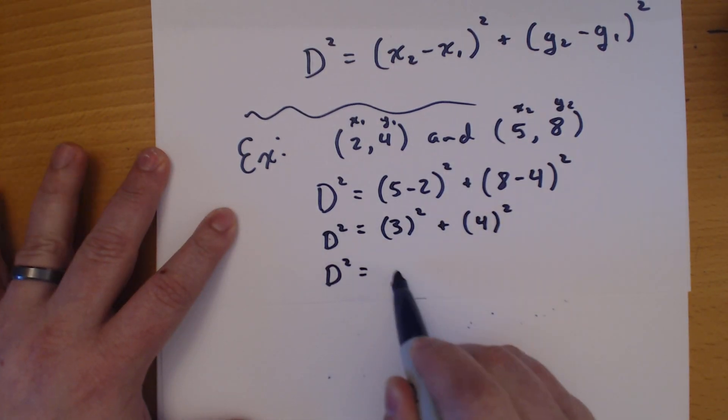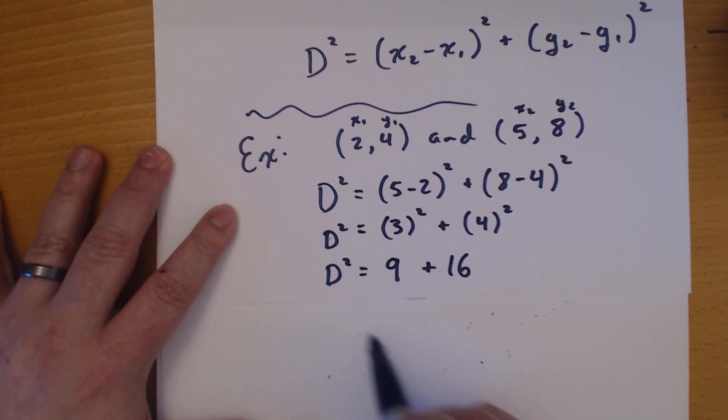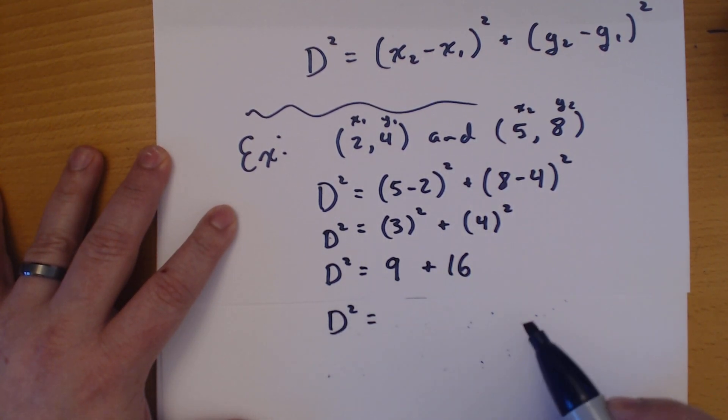3 squared is 9, 4 squared is 16. 9 plus 16 is 25.